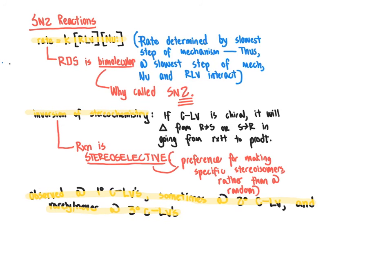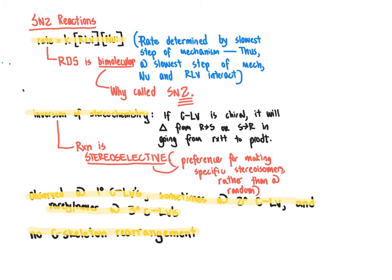When devising our reaction mechanism, we need to logically explain why the reaction occurs best at a primary carbon and worst at a tertiary carbon. A fourth feature to put on the list is that the carbon skeleton will not rearrange in going from reactant to product — no carbon skeleton rearrangement. Where all the carbon atoms are to start with is where they're going to be when the reaction finishes. With these four features in mind, the mechanism we need to think about for an SN2 reaction must encompass all of these highlighted features.